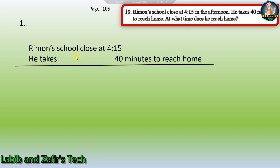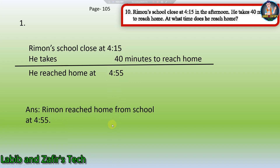Remo's school closed at 4.15 and he takes 40 minutes to reach home. To find out the time we have to add 40 to 4.15. If we add then we get 4.55. So 5 plus 0 is 5, and 4 plus 1 is 5, and the hours remain 4. So Remo reached home from school at 4.55.